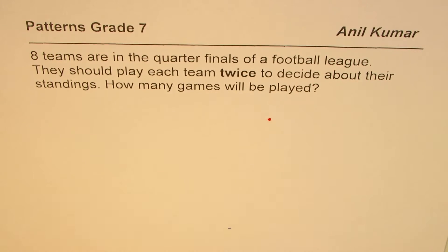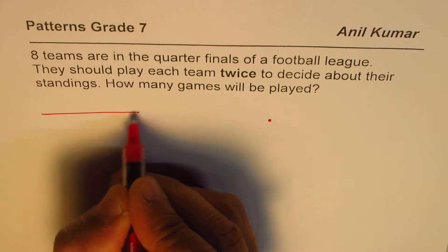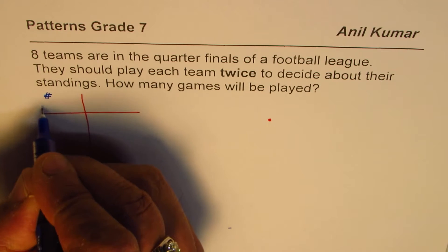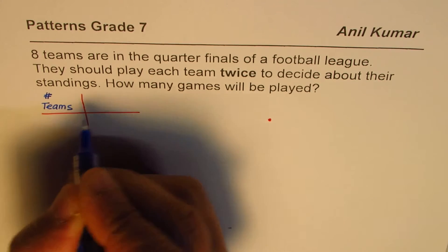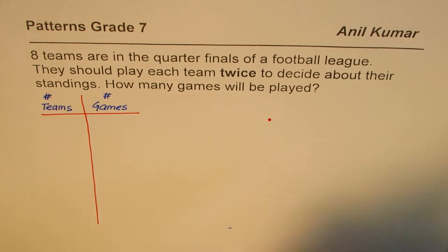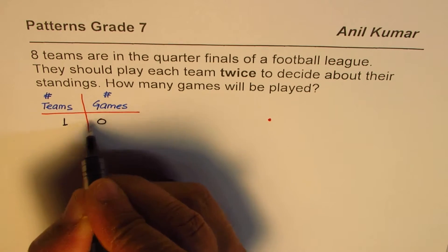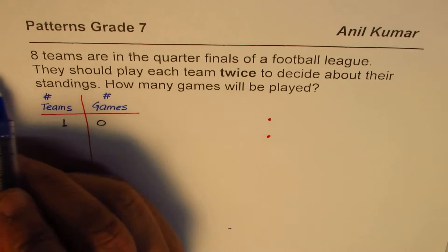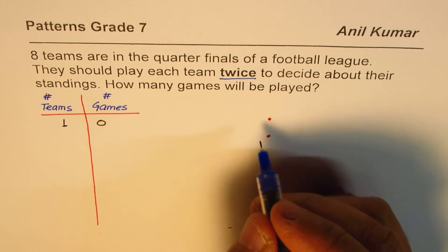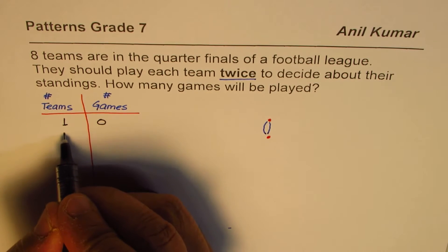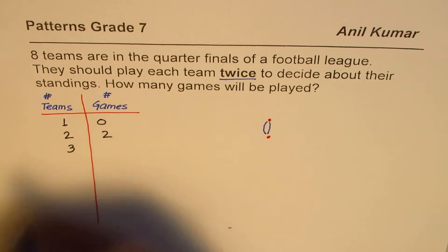Let's start with one team. If there is one team, how many games will be played? None. To record this, we can make a table of values — number of teams and number of games. If we have just one team, there cannot be any game, so zero. If there are two teams, they play each other twice, so they play two games.